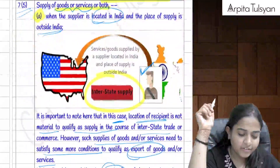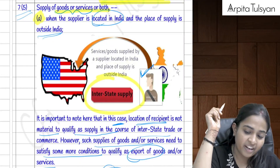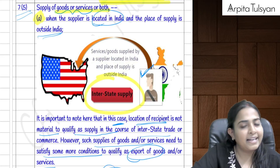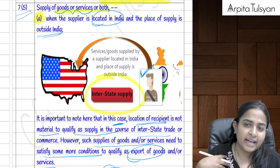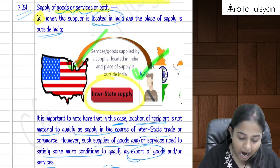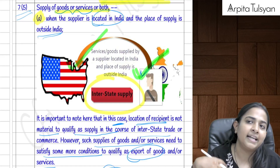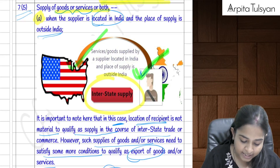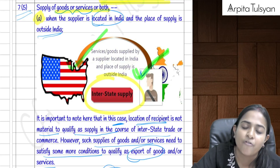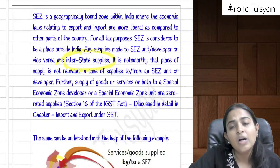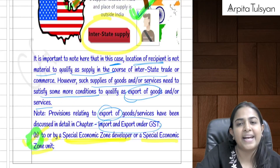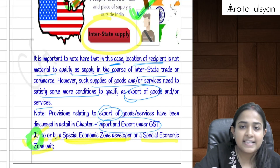Section 7(5) covers export situations: if a supplier in India supplies goods or services to a person located outside India, and the place of supply is also outside India, this qualifies as export — which is treated as interstate supply, subject to fulfillment of other export definition requirements.